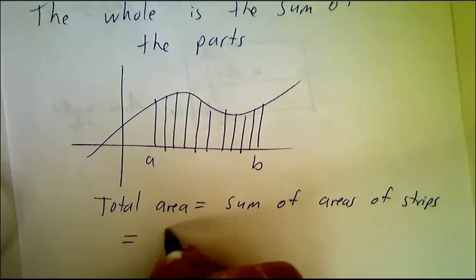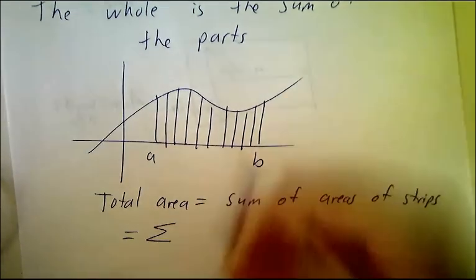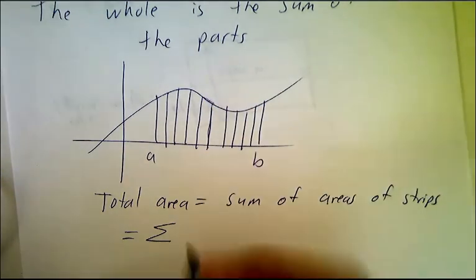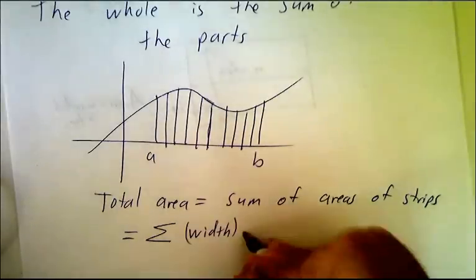And each strip, I'm going to use the Greek letter for sum, each strip is basically a rectangle. Okay, it's not exactly a rectangle, the top is wiggling a little bit, but it's basically the width times the height.